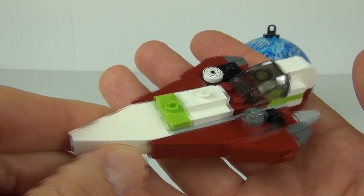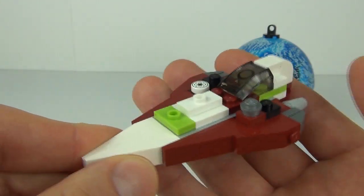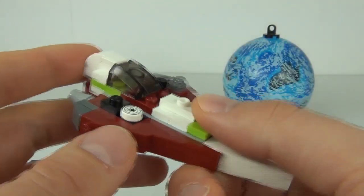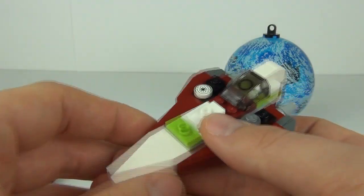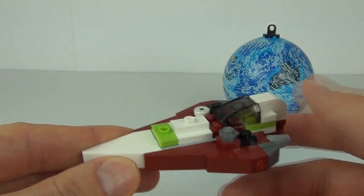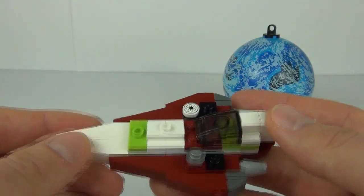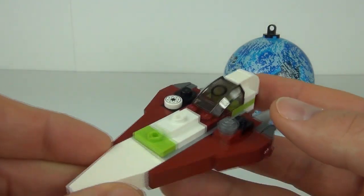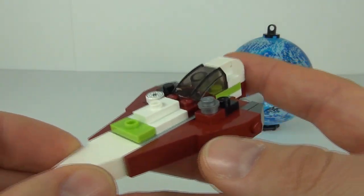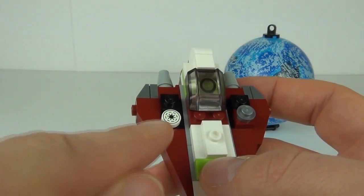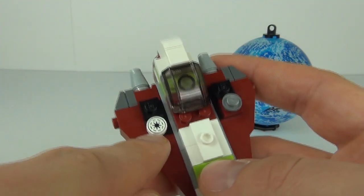Now let's have a look at the Delta 7 Light Interceptor. In my opinion this is the best vehicle of the new Series 3 Planet sets. It does look really cool. And it is very difficult to get a vehicle to look good with so little parts. But I think LEGO have pulled it off with this one. Get the translucent cockpit piece which is a nice piece to have for MOCs.